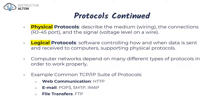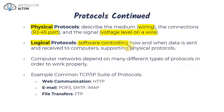Physical protocols cover the physical aspects of the network: the medium such as wiring, the connections like RJ45 ports, and the signal itself — the actual voltage level on the wire. Logical protocols involve the software and how it controls when and how data is sent and received between computers. Logical protocols support physical protocols and vice versa.